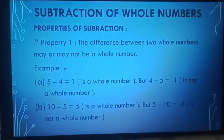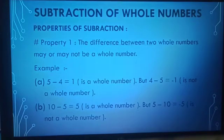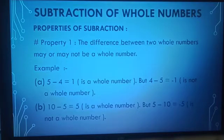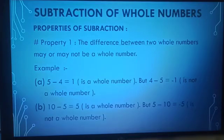Property 1: The difference between two whole numbers may or may not be a whole number. For example, 5 minus 4 is equal to 1, which is a whole number. But if we do 4 minus 5, this is equal to minus 1, and minus 1 is not a whole number.